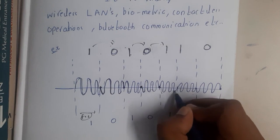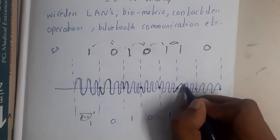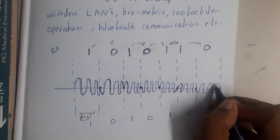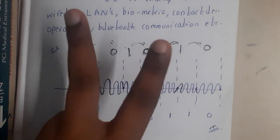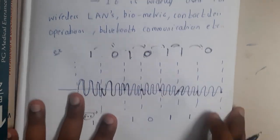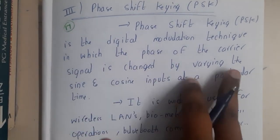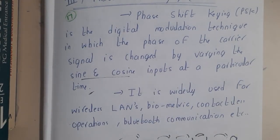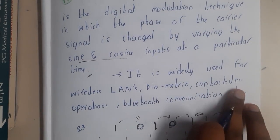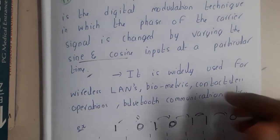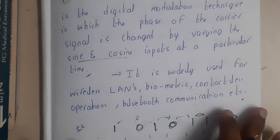Again there is a change, so instead of going down you go up. Then no change, so continue up. Again a change — instead of going up, go down. This is how the phase change occurs. Phase Shift Keying (PSK) is a digital modulation technique in which the phase of the carrier signal is changed by varying the sine and cosine inputs at a particular time. It is widely used in wireless LAN, biometrics, contactless operations, and Bluetooth communication. PSK is the most widely used modulation technique.